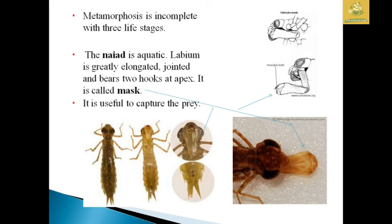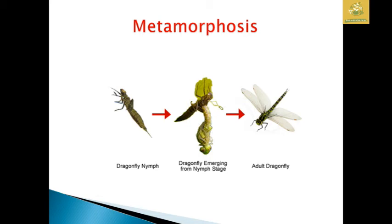Metamorphosis is incomplete with three life stages. The naiad is aquatic and the labium is greatly elongated, jointed, and bears two hooks at the apex — this is called the mask and is used for capturing prey. I have given a picture of the metamorphosis where you can see the dragonfly nymph emerging into the adult stage.